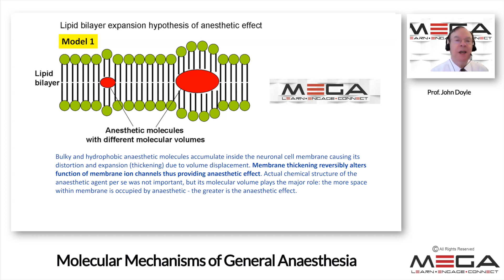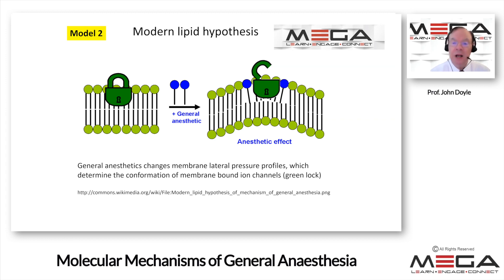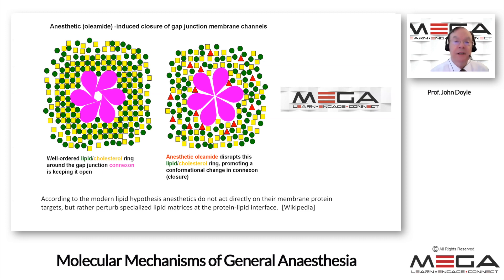I'm calling this Model 1 of anesthesia, and I'm going to expose you to five different models including the more popular one today. Model 2, the modern lipid hypothesis, is that general anesthetics change the membrane lateral pressure profiles, which determine the conformation of membrane-bound ion channels. According to this, a well-ordered lipid-cholesterol ring around the gap junction maintains an open gap junction, but with anesthetic molecules introduced — shown as red triangles — you have closure of this connection.